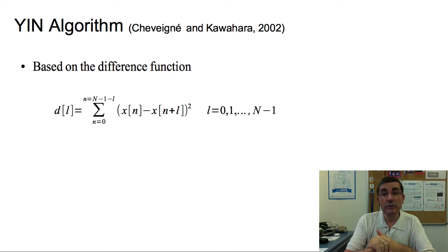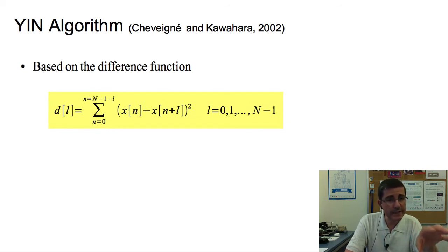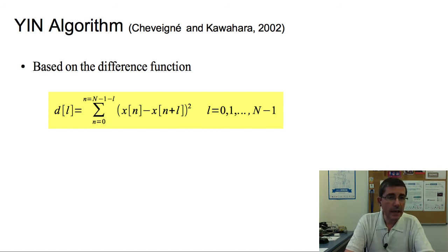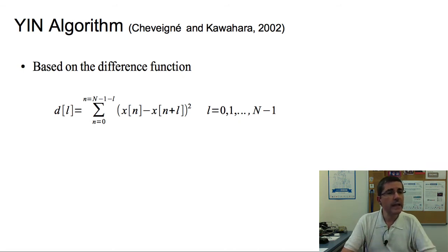A method similar to the autocorrelation is the one proposed by Cheveign and Kawahara, named YIN. It's based on the difference equation, which is similar to the autocorrelation — we take the difference between samples with a given lag, square it, and then sum. This function is zero when the lag equals the cycle length, so we find the minima of the function. The YIN algorithm does some extra processing to get a good measure of this period, and it does a pretty good job for monophonic signals. It has become a very common algorithm for speech and for measuring fundamental frequency on monophonic musical instruments.